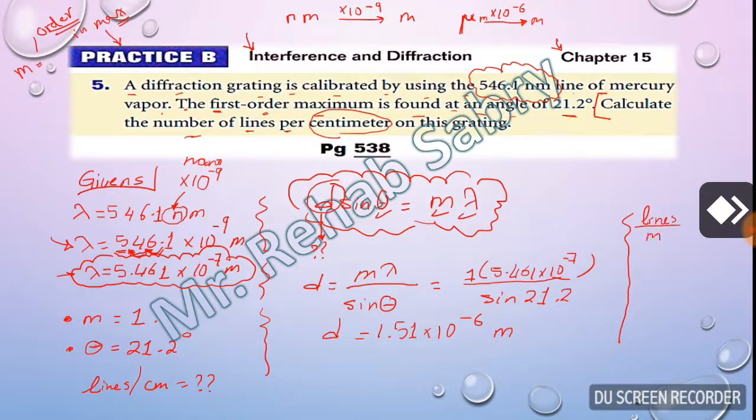But let me remind you that we said lines per meter equal 1 over d in meters. 1 over d, this is meter by the way, not centimeters.